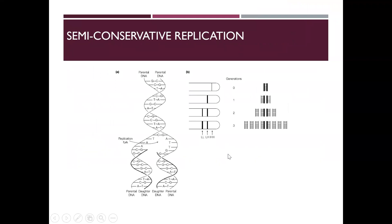This diagram shows the results of the Meselson-Stahl experiment. They took E. coli cells and for several generations, these cells were grown in a medium containing the heavy isotope of nitrogen, N15. The normal nitrogen is N14; its heavy isotope is N15. After several generations of growth in that medium, the entire nitrogen was replaced by N15, meaning both strands of DNA contained the N15 isotope.